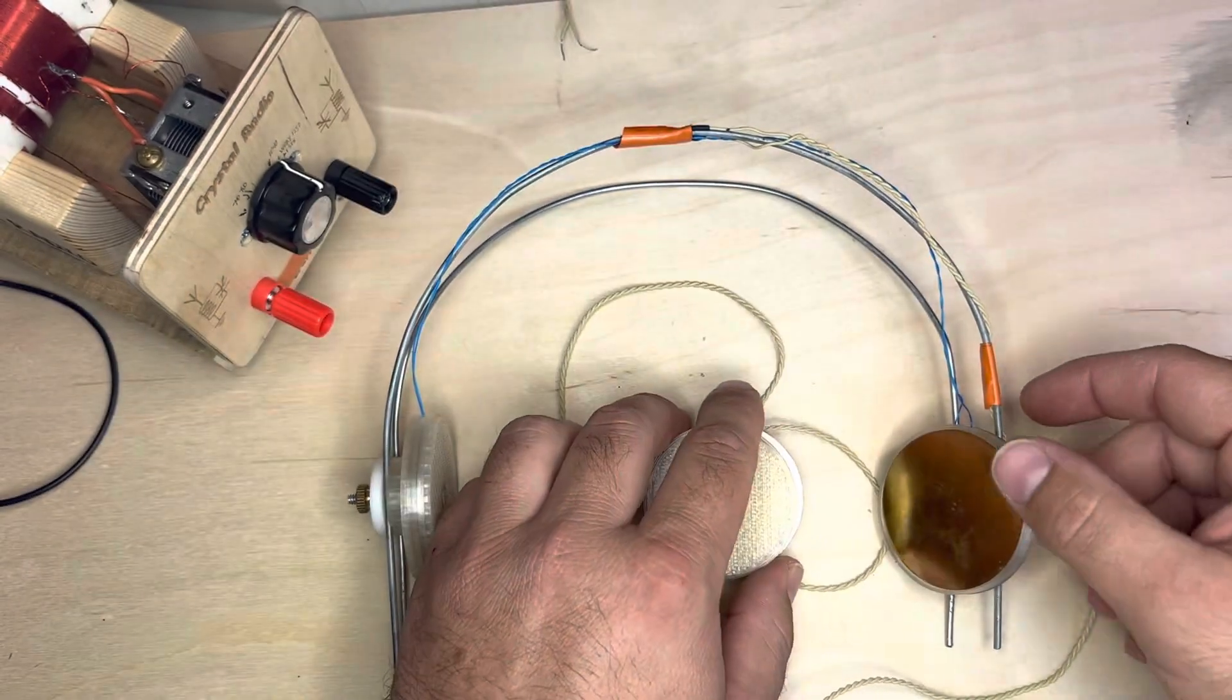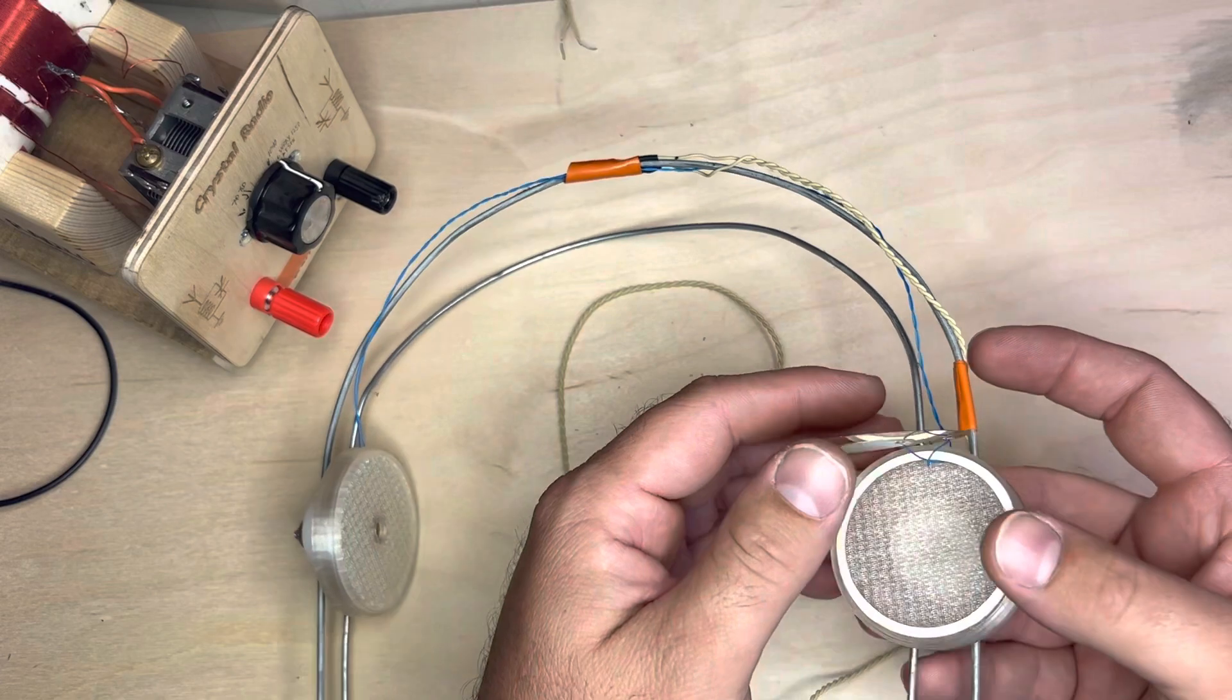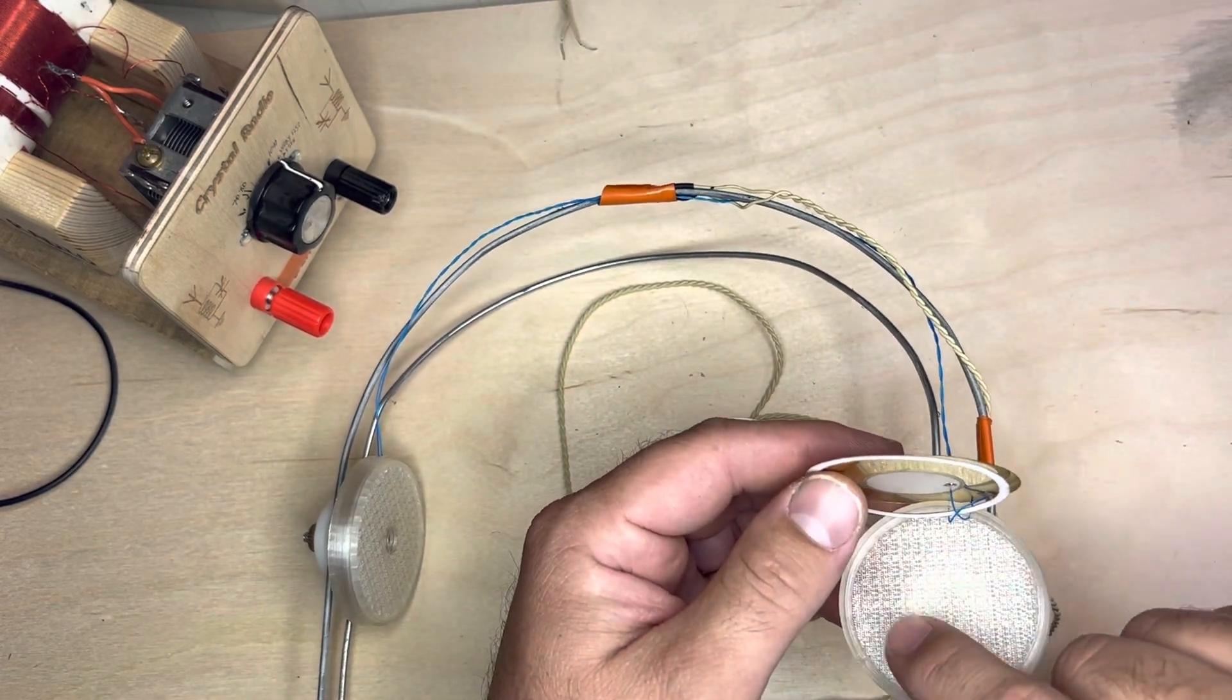And the same thing goes for the back of the housing. If you look here, it's the same way. I 3D printed a little bit of a step in here just to give a nice two to three millimeter gap between the surface of this disc and the housing.